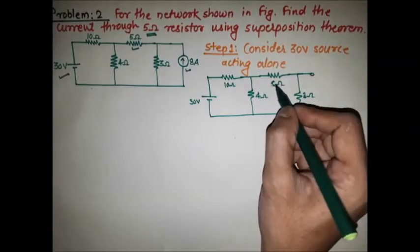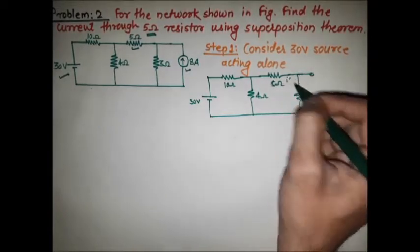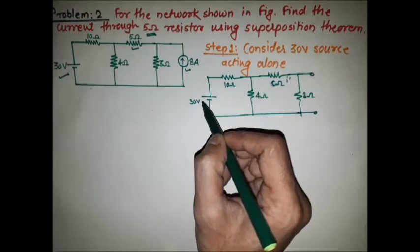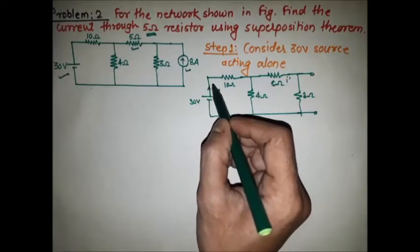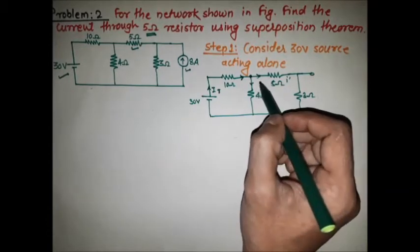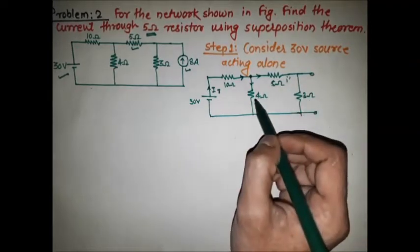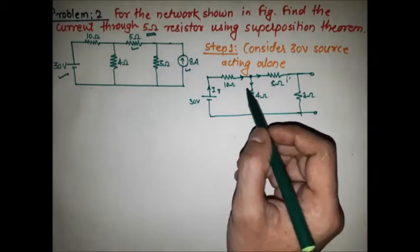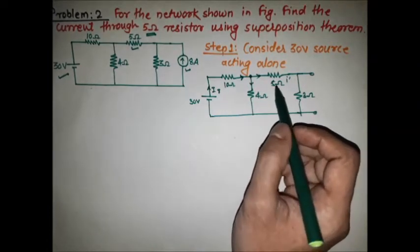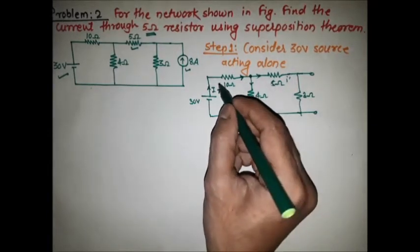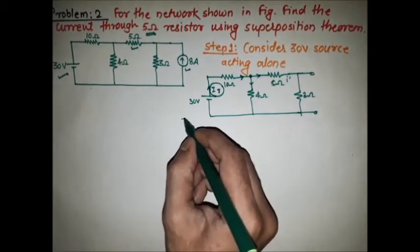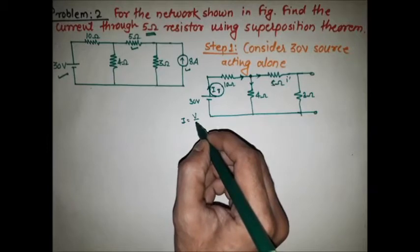Now we have to find the current through the 5 ohm resistor, calling it I'. The total current flowing from the 30V source is IT. It arrives at a node and is distributed into two branches — one through the 5 ohm and 3 ohm, and one through the 4 ohm resistor. We can use the current division rule. To find IT, we use Ohm's law: I = V/R.